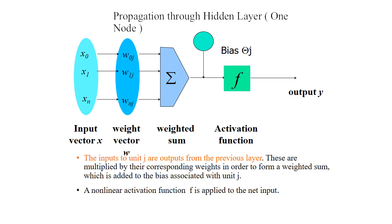The inputs to unit j are outputs from the previous layer. These are multiplied by their corresponding weights to form a weighted sum, which is added to the bias associated with unit j. This is the simple structure of one node. Finally, a non-linear activation function f is applied to the net input in order to produce the output.